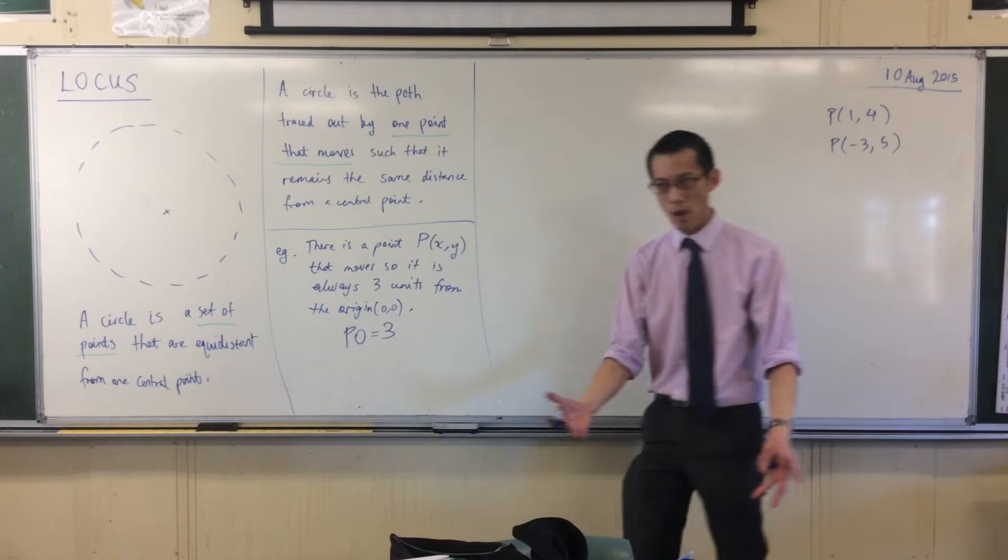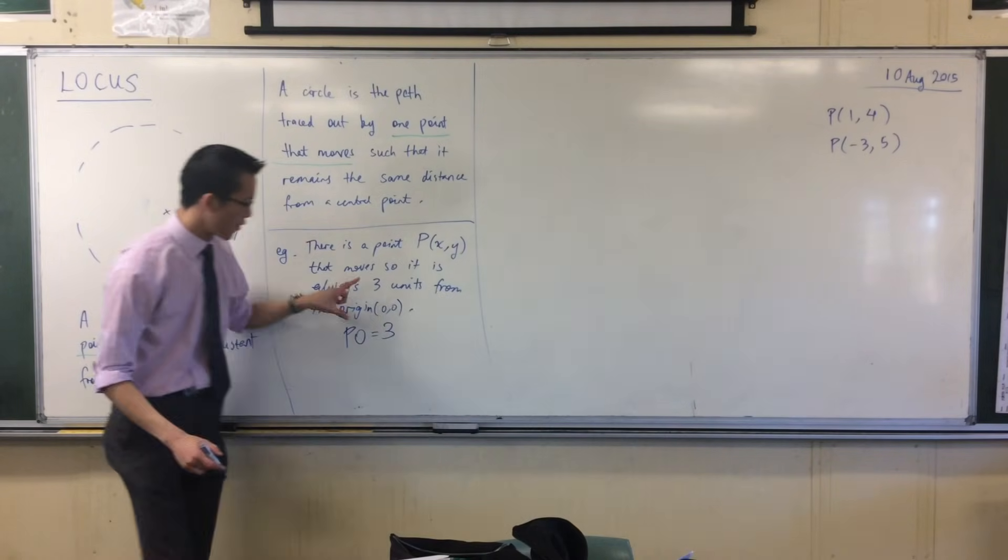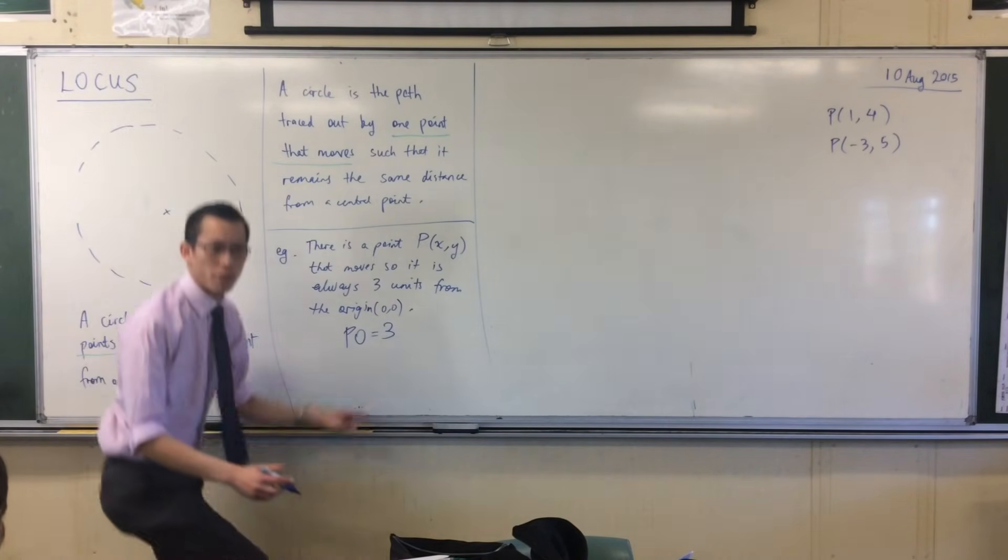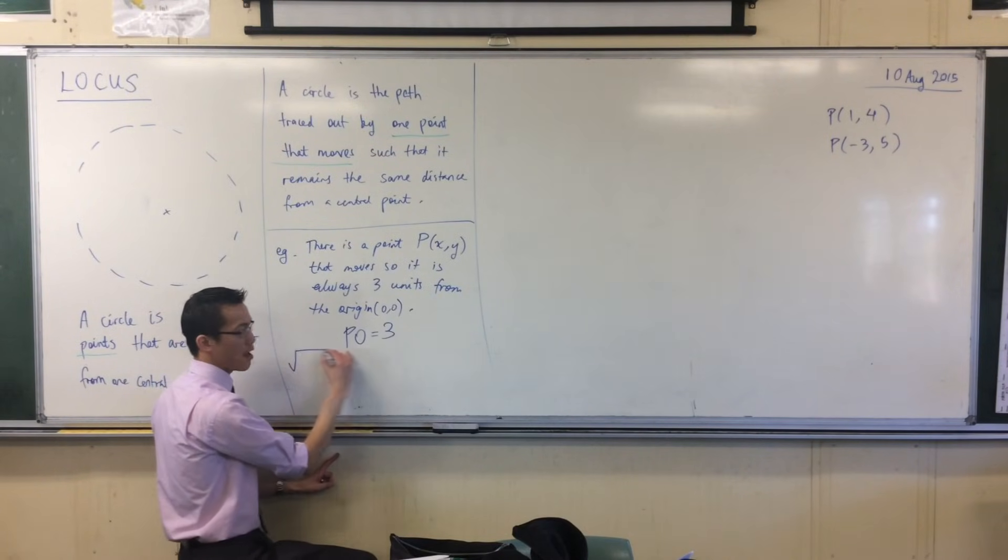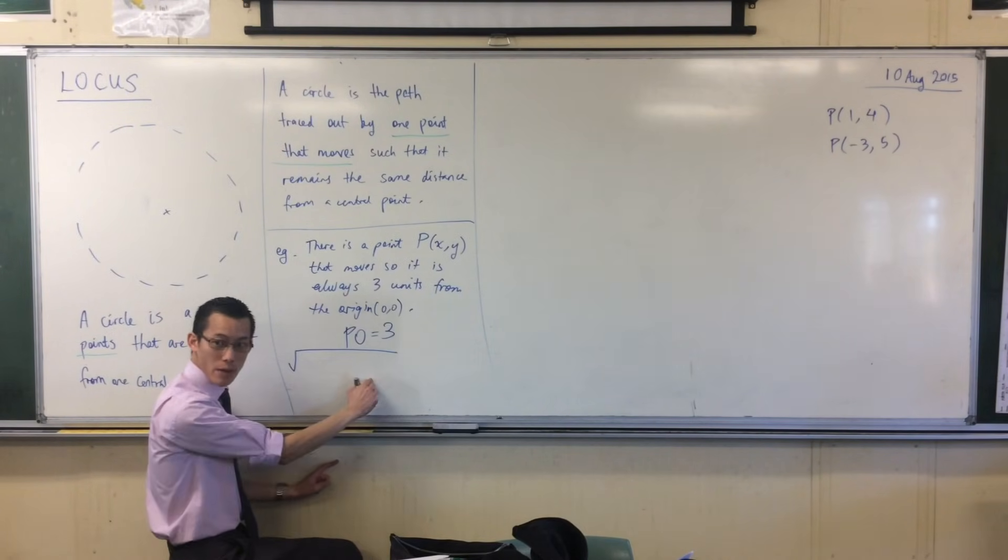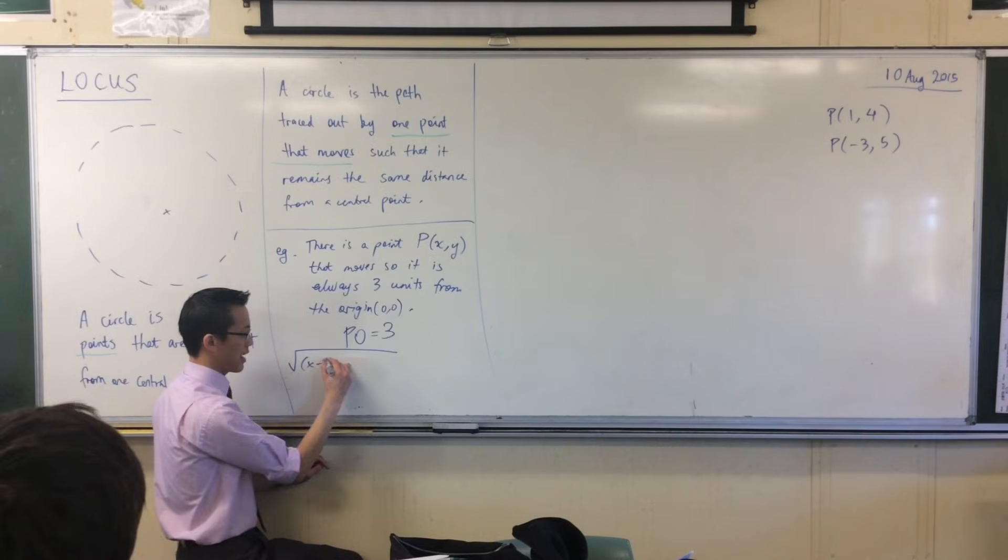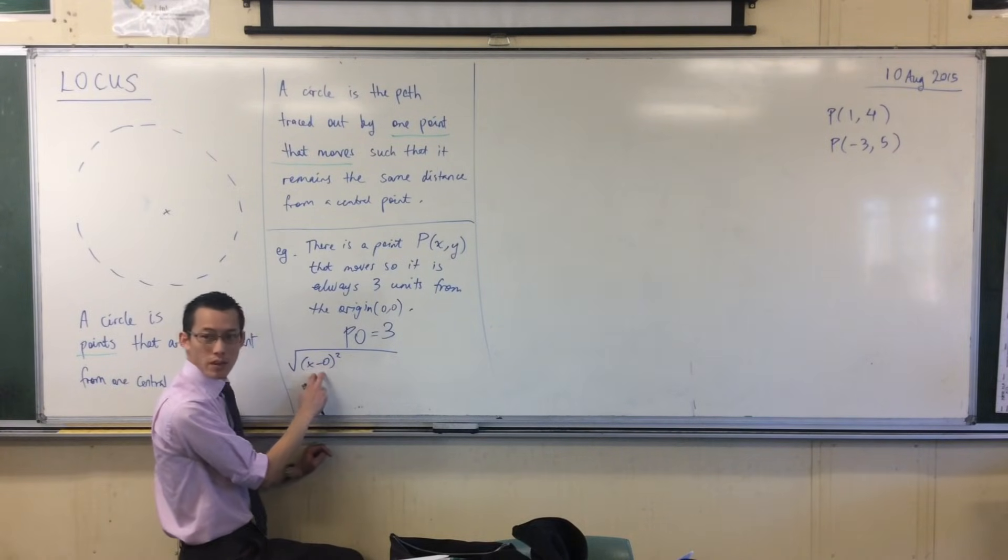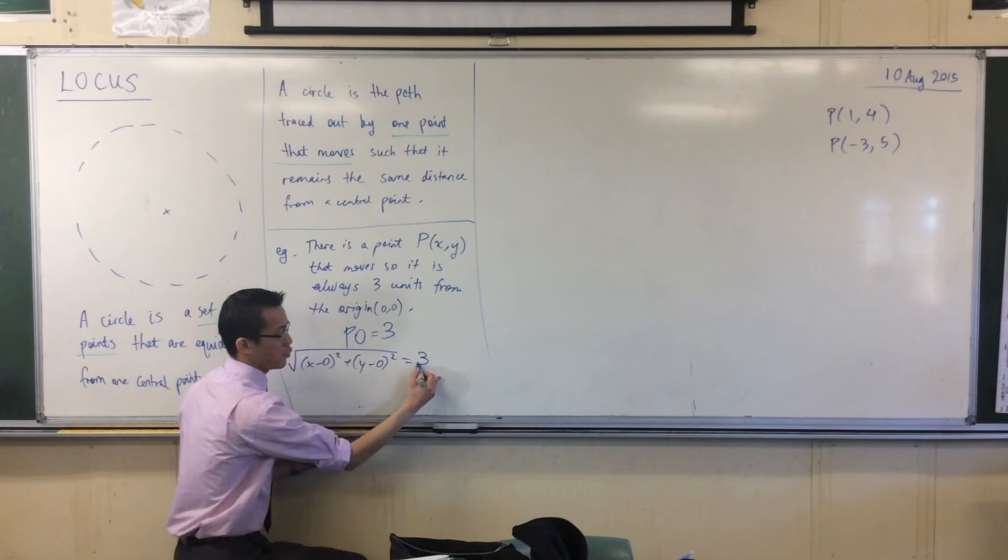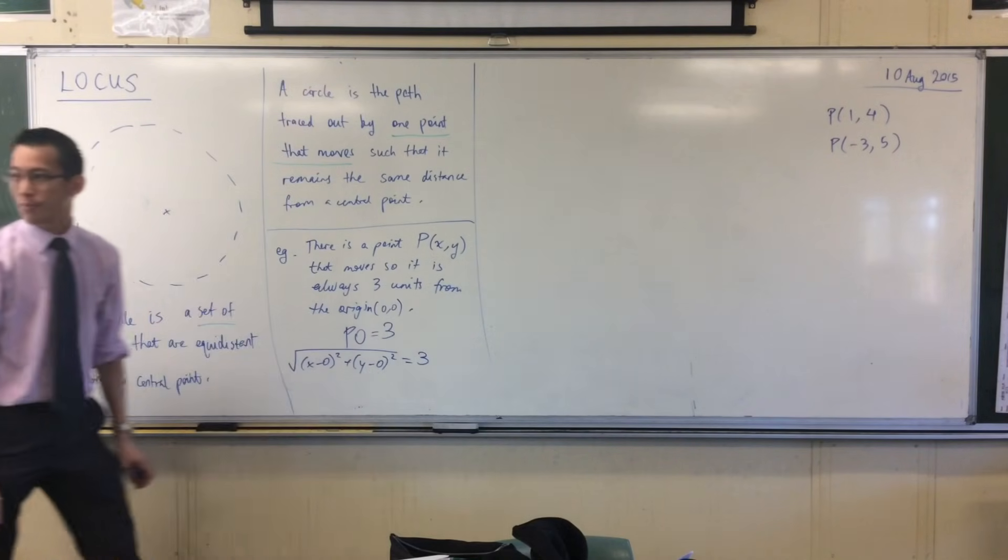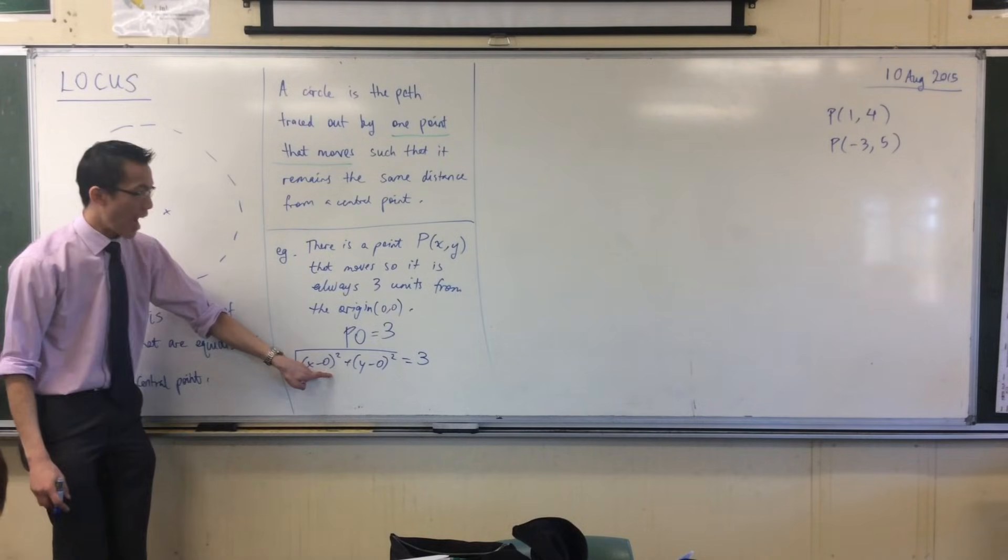Just use the distance formula. What does the distance formula tell me? If these are my two points, quote it for me: PO is equal to the square root of—what's going to go into the square root? Okay, good. You take the two x-coordinates, x minus zero squared, plus y minus zero squared. So where does this come from? It comes from Pythagoras. And that's equal to three.